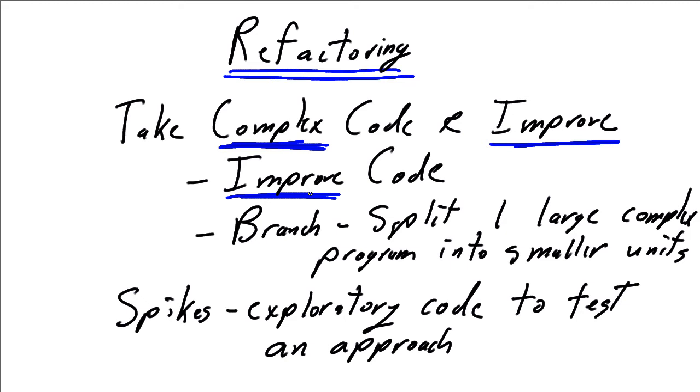But often what refactoring needs is an actual branching process where we're going to split that large complex program into a number of smaller units. You're probably going to have an overhead program that's going to act as the traffic cop. If it's this type of transaction, you're going to call module A, and if it's this type of transaction, you're going to call module B, and if it's this type of transaction, you're going to call module C.